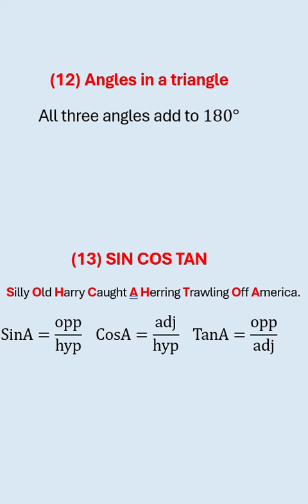Number thirteen, sine cos and tan for right angle triangles. An easy way to remember is silly old Harry caught a herring trawling off America. So you have sine A equals opposite over hypotenuse, cos A is adjacent over hypotenuse, and tan is opposite over adjacent.